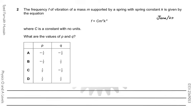This is June 2020, Paper 1.1, question number 2. This question is from chapter number 1, on homogeneous equations. If the equation is homogeneous, then the units on the left-hand side and the units on the right-hand side will be the same.